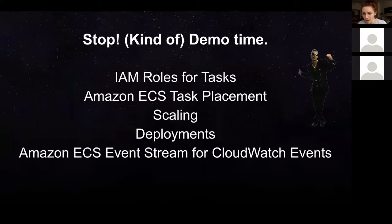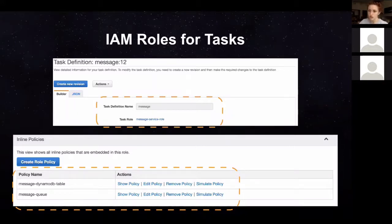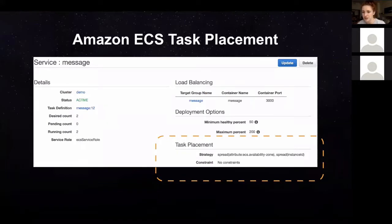Looking at these features in the console — here is IAM roles for tasks. You can see the role broken down to a really low level: it can talk to DynamoDB and to the message queue. That is a message service role — only message tasks get that role and they can't access anything other than that. For task placement in the console, you can see that for our demo task we're spreading it out based on availability zone, distributing tasks evenly between US-East-1A, 1B, and 1D.